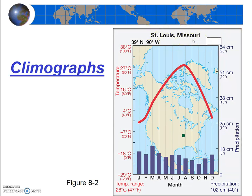You'll notice that the textbook climographs also include a map to show the location. They also show the latitude and longitude of the location, the temperature range from summer to winter, and also the total precipitation.